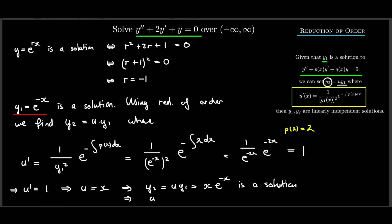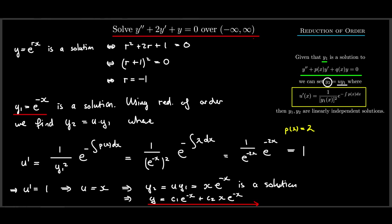So our final solution is the general linear combination y = c1·e^(−x) + c2·x·e^(−x). Again, one can verify this is correct by plugging it back into the differential equation and checking that it equals zero.